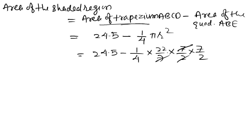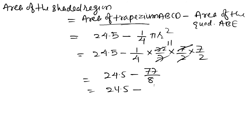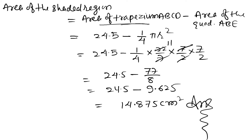Simplifying: the 7s cancel and we get 24.5 minus 77/8. Dividing 77 by 8 gives 9.625, so the area of shaded region equals 24.5 minus 9.625, which equals 14.875 cm², which is our required answer.